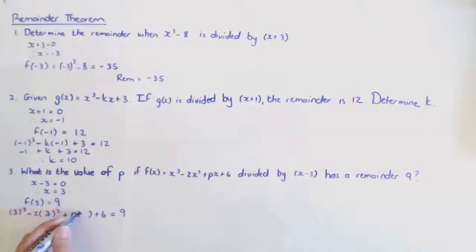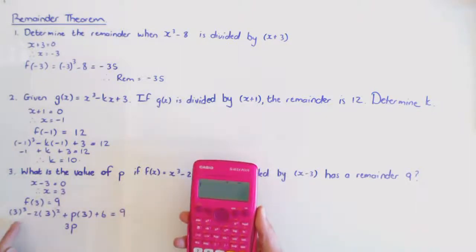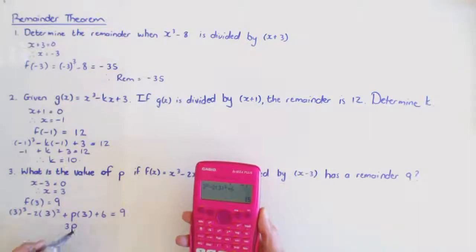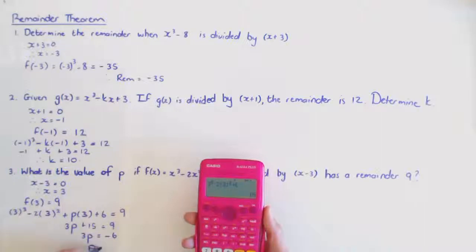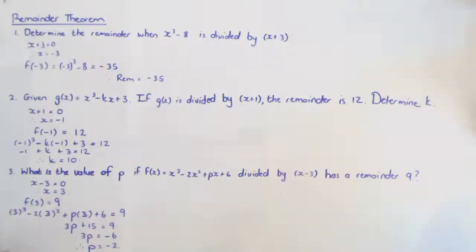Using a calculator for the non-p terms: three cubed minus two times three squared plus six gives 15. So three p plus 15 equals nine, meaning three p equals nine minus 15, which is negative six. Dividing both sides by three gives p equals negative two. That's how you use the Remainder Theorem.